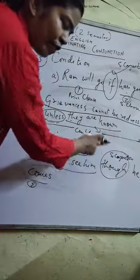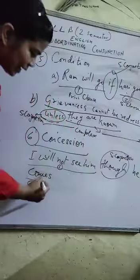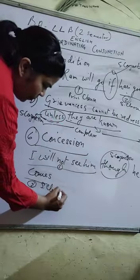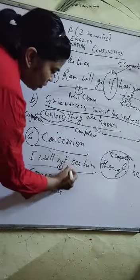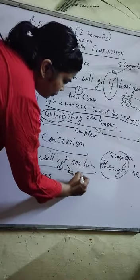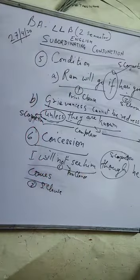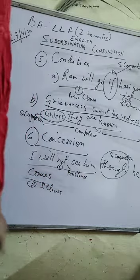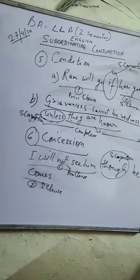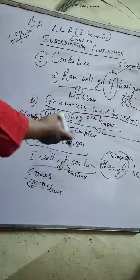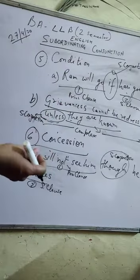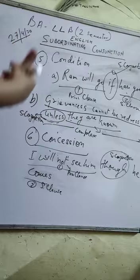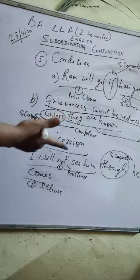Subordinating conjunction को आपको find out करना है, उसके बाद आप बता सकेंगे कि subordinating clause क्या है और principal clause क्या है. इस तरह से आप subordinating conjunction को identify कर सकते हैं through examples. और हम उसको words — subordinating conjunction words — अगर हमें पता है, तो हमें आसानी से समझ में आ जाता है कि subordinating clause और principal clause कौन से हैं.